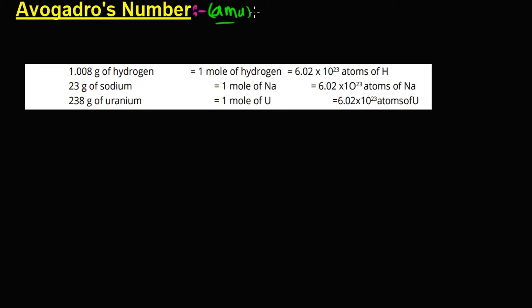Similarly for a compound or for ions — Avogadro's number is related to the number of atoms present in any one gram mole. The number of atoms in any one mole, whether we take an atom, a molecule, or an ion — the number of atoms, particles, or ions will be a fixed value. Let's take an example of this.